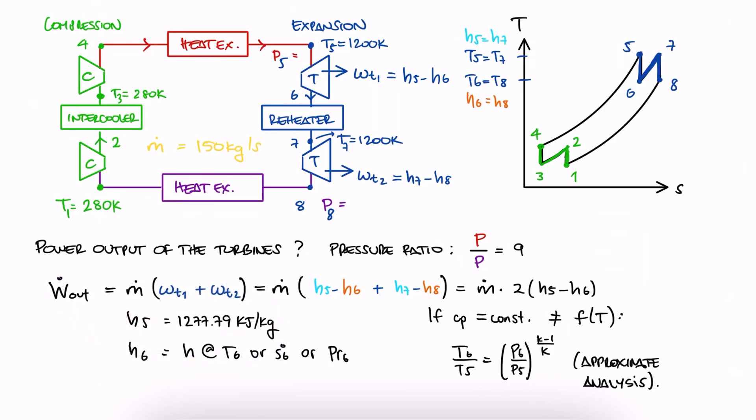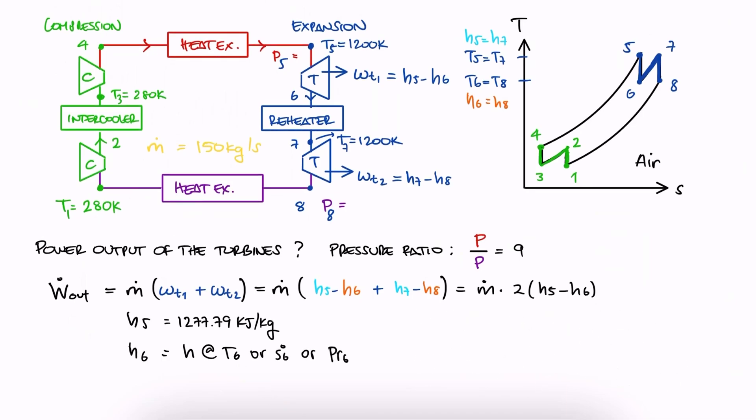This would allow us to find T6. However, since what we have here is air, which we do have tables for because the specific heat is not constant for all temperature values, we can use the method we labeled exact analysis.